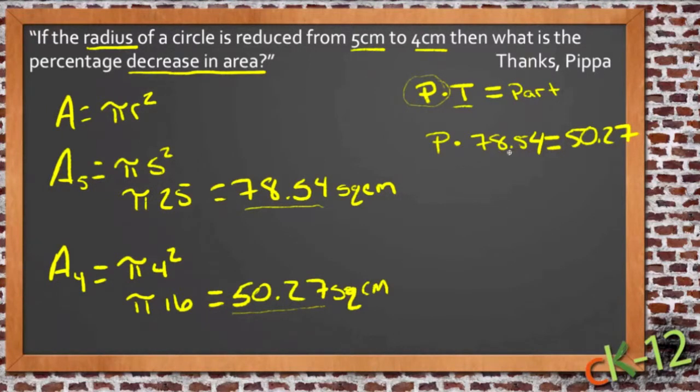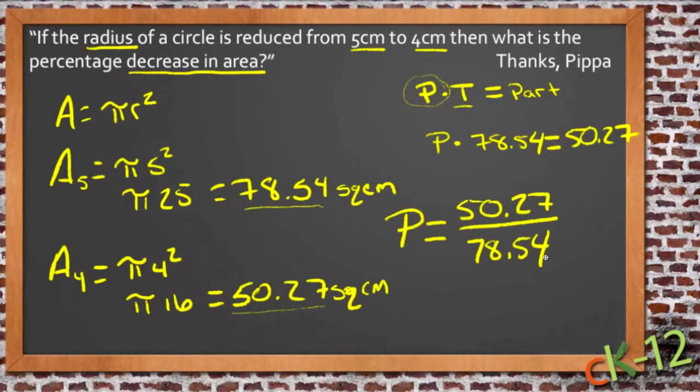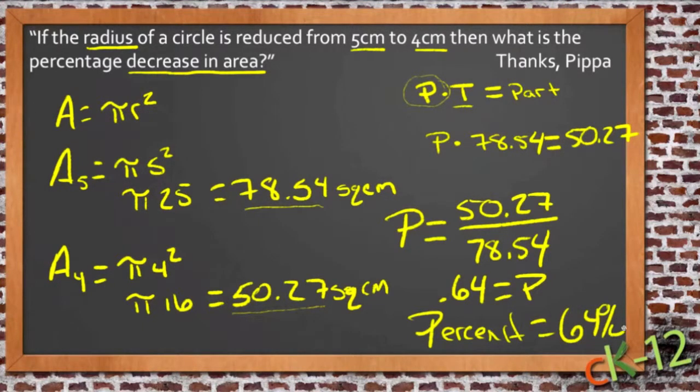So then we need to solve for p, so we're going to divide both sides by 78.54, and we'll get the percent that we're looking for is 50.27 divided by 78.54. And if we run that through a calculator, 50.27 divided by 78.54, we get 0.640, which is 0.64 as a decimal. So our percentage is 64%.